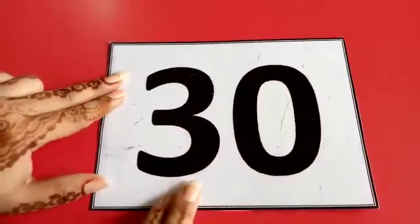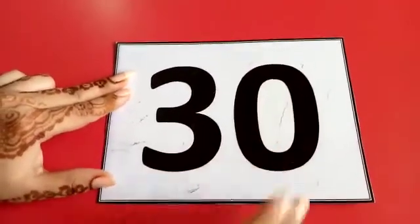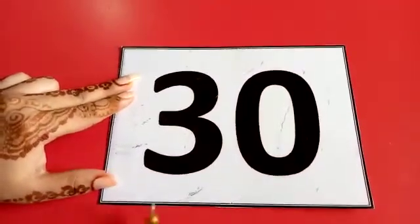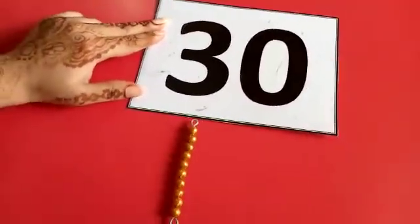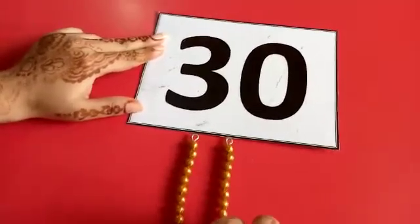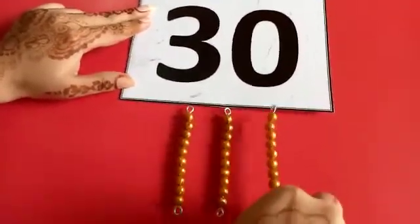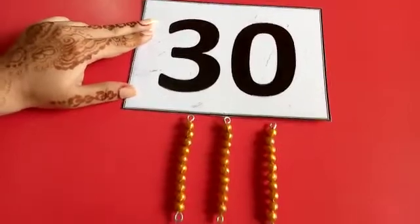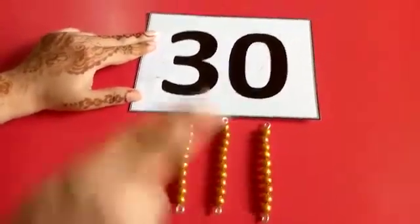Twenty, thirty. Thirty, three, zero, thirty. One ten. Two tens. Three tens. Ten, twenty, thirty. Thirty.